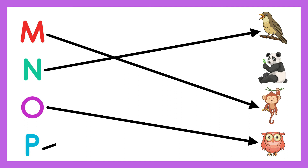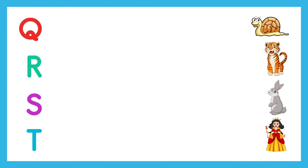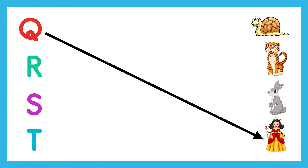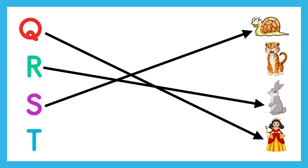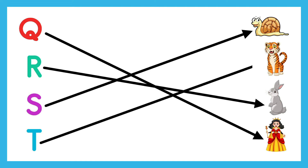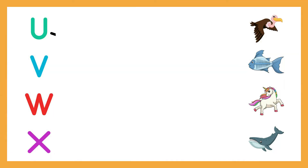P - Panda. Q - Quail. R - Rabbit. S - Snail. T - Tiger.